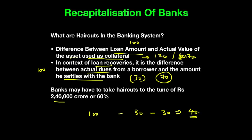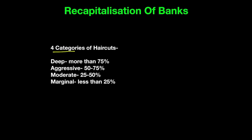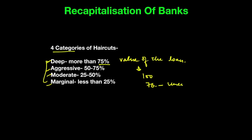Banks may have to take haircuts to the tune of Rs. 2,40,000 crore, or 60% of their big loans. According to RBI, there are four categories of haircuts: deep — when more than 75% of the loan value is not recovered (e.g., only Rs. 24 out of Rs. 100 is recovered); aggressive — when 50 to 75% is not recovered; moderate — 25 to 50%; and marginal — when less than 25% of the loan value is not recovered. These facts are very important to remember.